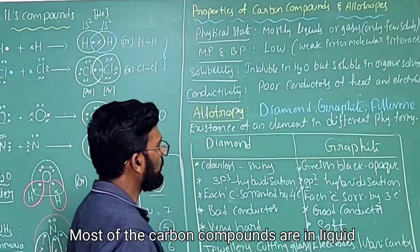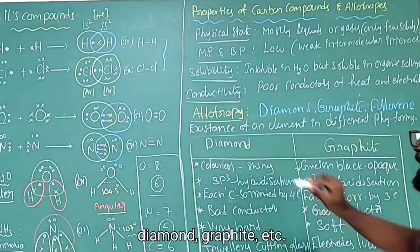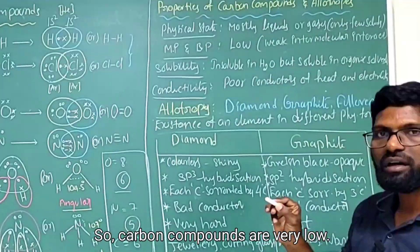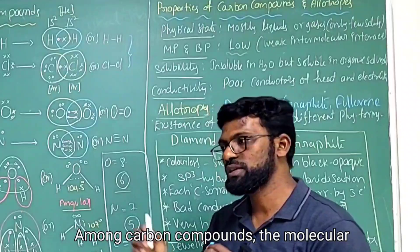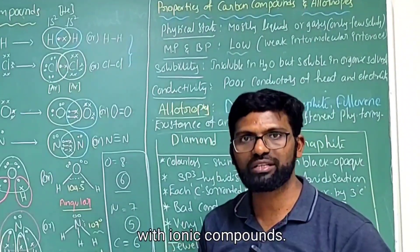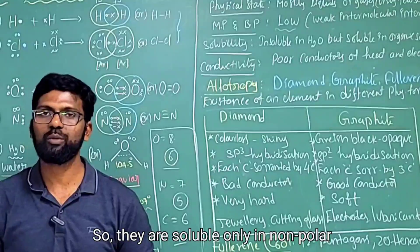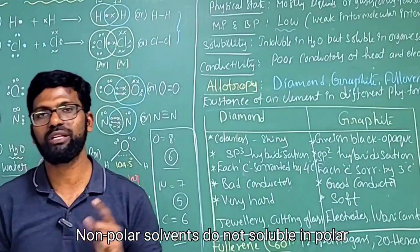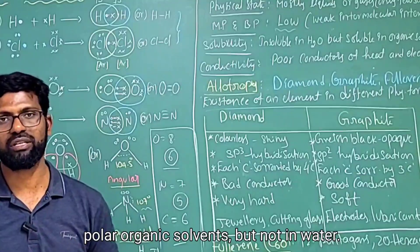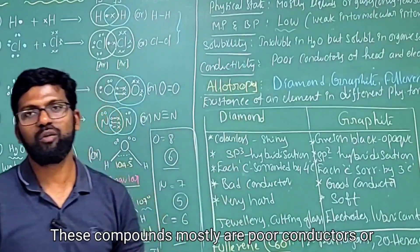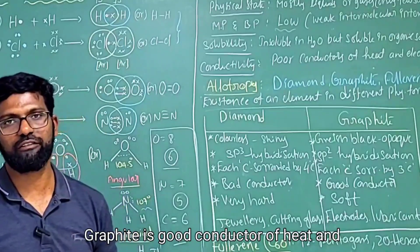Now let's move on to the properties of carbon compounds. Physical state: most carbon compounds are in liquid or gas state; very few are in solid state, like diamond and graphite. Melting and boiling points of carbon compounds are very low due to weak intermolecular interactions, which are much weaker than in ionic compounds. Solubility: carbon compounds are non-polar, so they are soluble only in non-polar solvents and not in polar solvents like water or ammonia. Conductivity: these compounds are mostly poor conductors of heat and electricity, with a few exceptions like graphite, which is a good conductor.